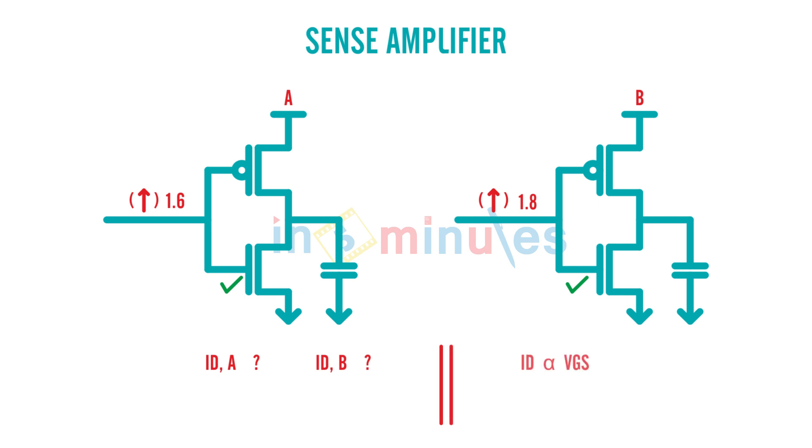ID is directly proportional to VGS. In this case of inverter A and B, source is grounded, so I can say that ID is proportional to VG. That means the transistor which has gate voltage more will have a higher ID, or in simple words, will be able to discharge its output capacitance faster or will reach zero faster than the other one.